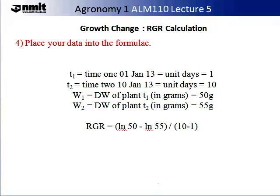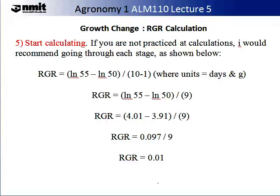The fourth stage is to place your data into the formula. Here we can see relative growth rate equals the log of 55 minus the log of 50, divided by the change in time, 10 days minus 1 day. The final stage is to start calculating. I would always recommend going through stage by stage and slowly reducing so that you do not make mistakes. Also, if you do make mistakes, sometimes marks will still be given for your methodology rather than your ability to calculate. Here we can see how we have come to the relative growth rate of 0.01.